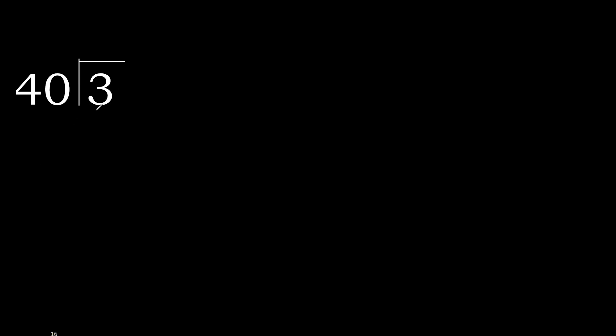3 divided by 40. 3 is less, therefore next. There is no number, therefore complete — always complete with 0. Here: 0, point.